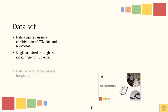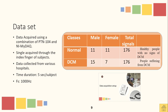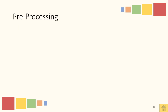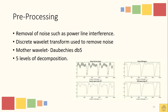After acquiring the raw signals, it can be visually seen that there are some noises present in the form of power line interference. These power line interferences are necessary to be removed, and for that a technique called discrete wavelet transform was used. The mother wavelet selected was Daubechies 5, or DB5, and the decomposition was carried out up to 5 levels. The images show a comparison of noisy and clean signals of a normal person and a person suffering from dilated cardiomyopathy.